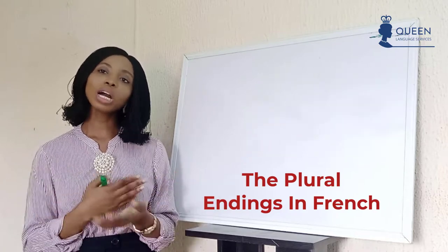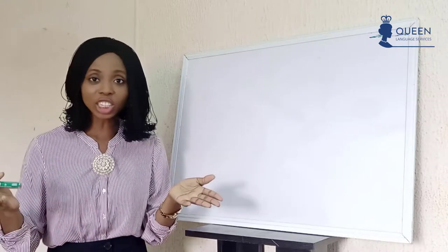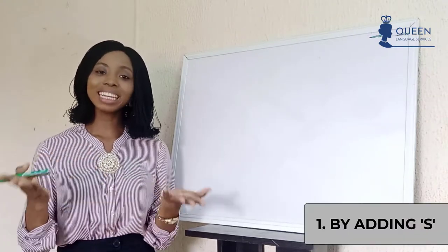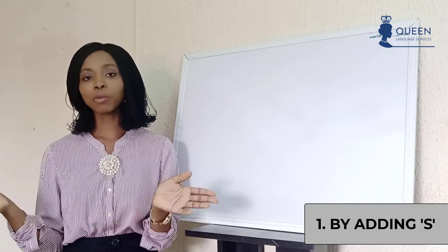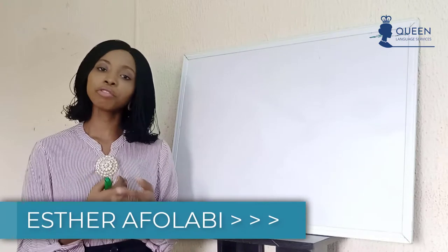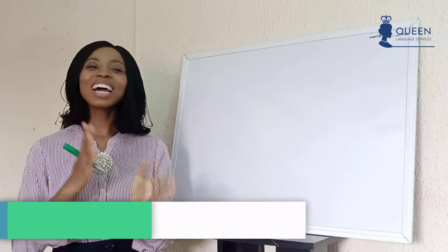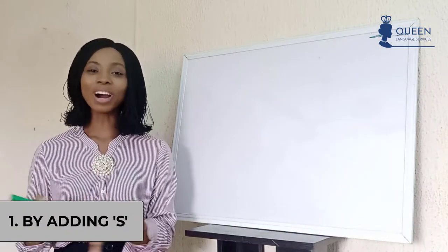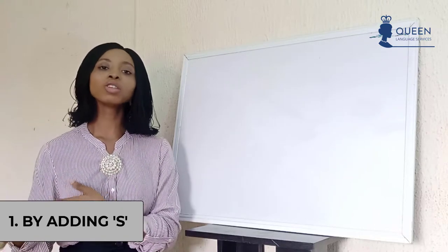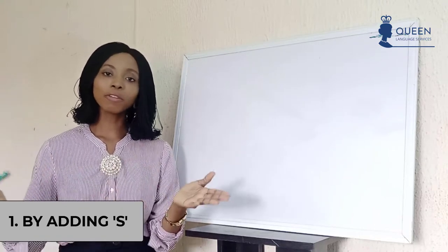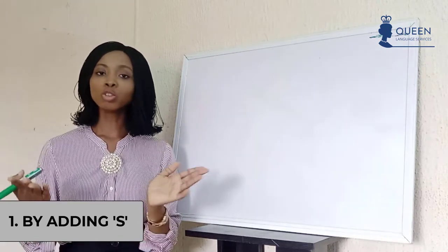How can we determine our plural endings in French language? Just like in English, by adding -s to the end of a word we have our plural form. Similarly, in French language, generally by adding -s to the back of the word we get our plural form as well. But there are other forms of having our plural form in French other than just adding an -s to the word.